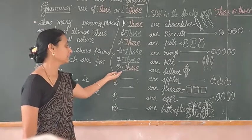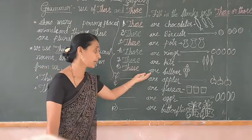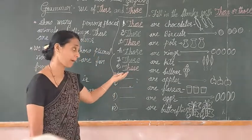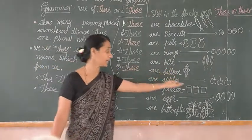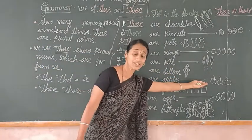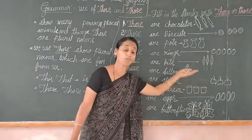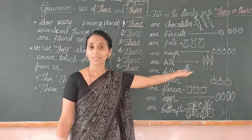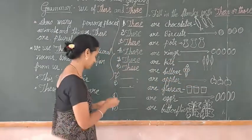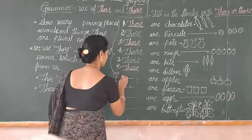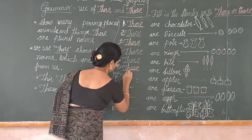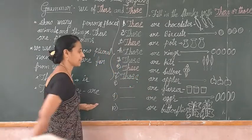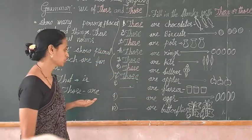Seventh example: blank of apples. Are the apples near to me or far away? Yes, apples are far away, so we can use 'those.'